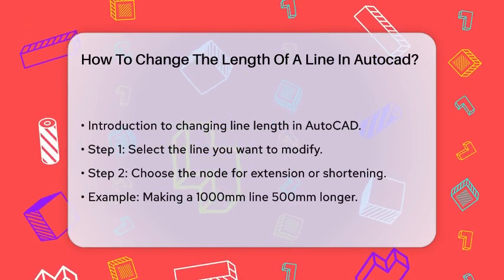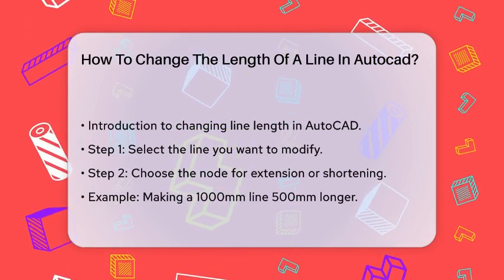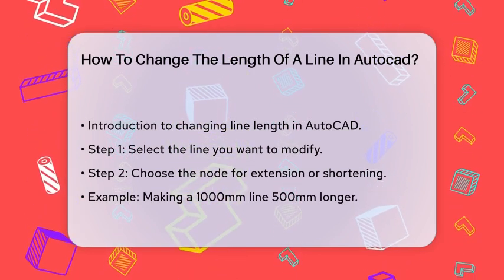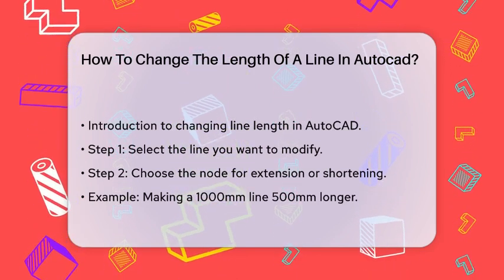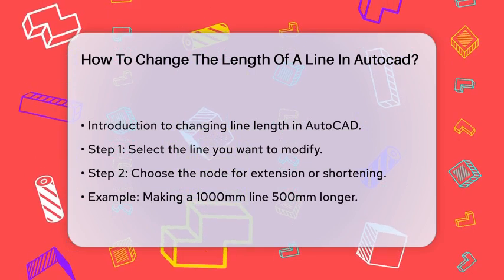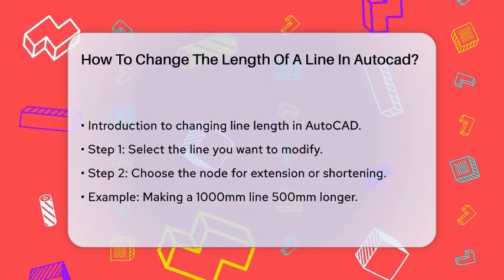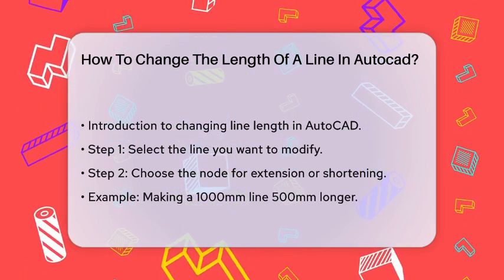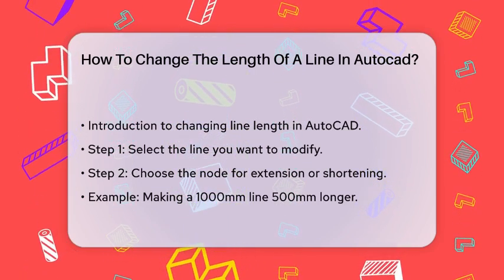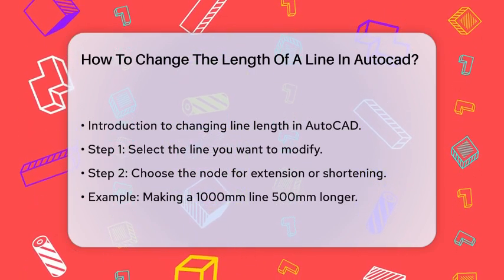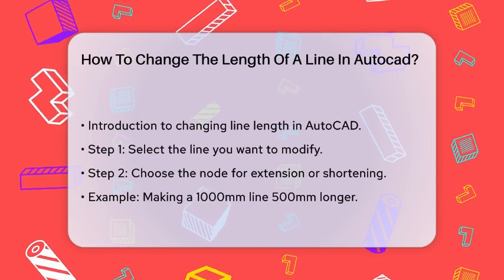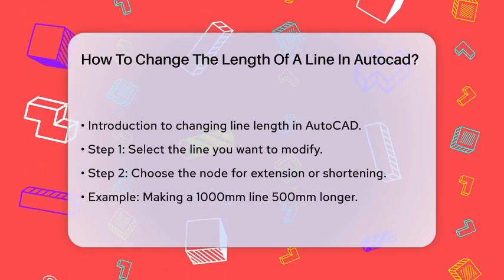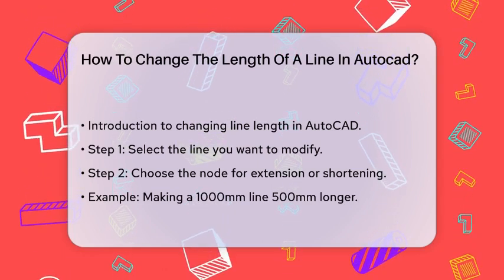Once you've selected the line, you'll need to choose the node from which you want to extend or shorten it. For example, if you want to make a 1000 line 500 longer, you select the line and then the node at the end where you want the extension to start.